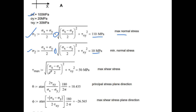Similarly, for maximum shear stress the formula is the square root of ((σx minus σy)/2)² plus τxy². Substituting the numerical data, the answer for maximum shear stress is 50 MPa.